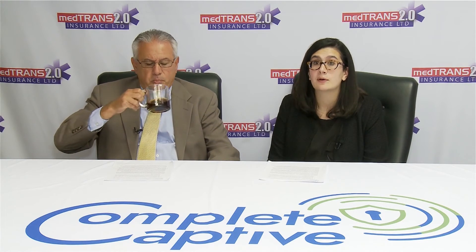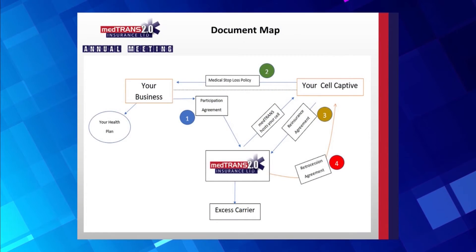And now we'll put up the slide that will demonstrate the core documents of the program. The participation agreement, like Jeff said, is the agreement that establishes your cell's relationship between the cell captive, the insured, and MedTrans. This document sets forth all of the governance matters within the MedTrans program, including capitalization, and also establishes the cell captive's ownership of MedTrans. The medical stop-loss policy is the insurance policy between the cell captive and the insured, or the employer, which establishes what risks of the employer-funded benefit plan are covered through the MedTrans insurance program.